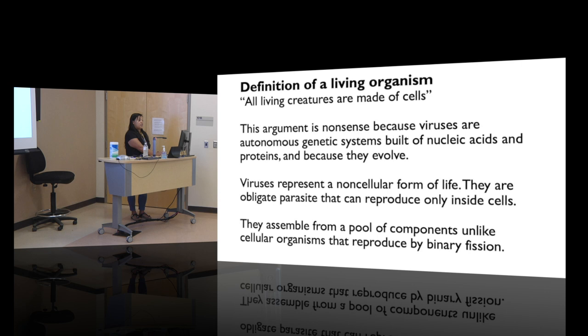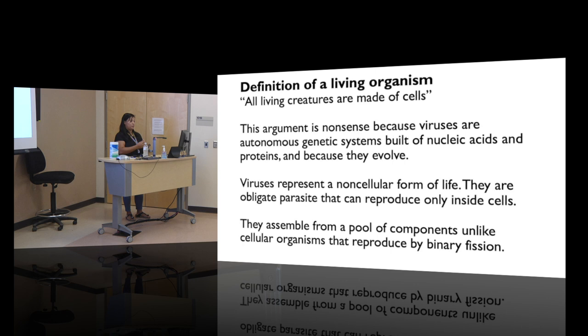Viruses are obligate parasites and can reproduce only inside cells — here we're talking about plant cells. Some plant viruses, like tomato spotted wilt virus, can actually replicate inside thrips cells as well, but most can only replicate inside a plant cell. In other organisms, reproduction happens by division or multiplication, but viruses assemble different components to make a new organism.